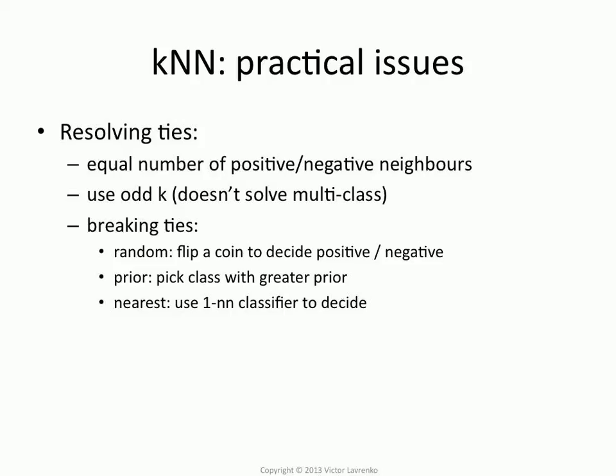So you need to break ties. There are several strategies for breaking ties. You could either do it randomly — flip a coin to decide which one of the tied classes it is. You could use a prior: if it has an equal number of reds and blues, are reds or blues dominant in the entire data set? Use that decision. Or you could always fall back to a one nearest neighbor classifier because that doesn't have ties.